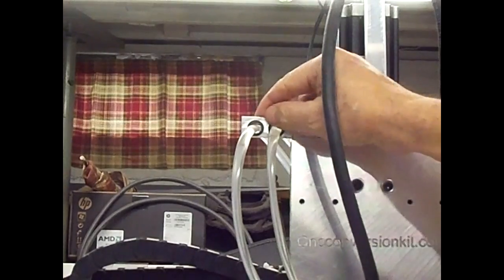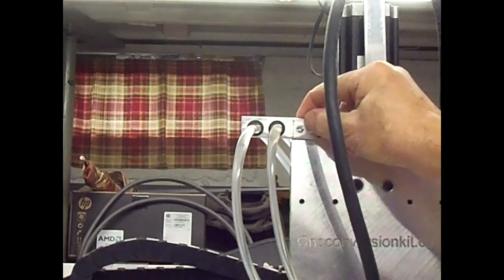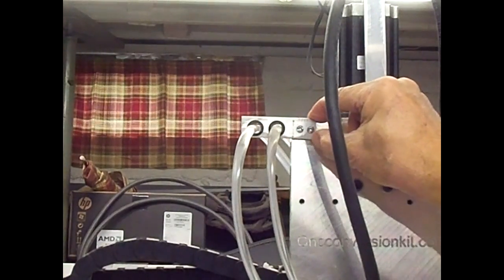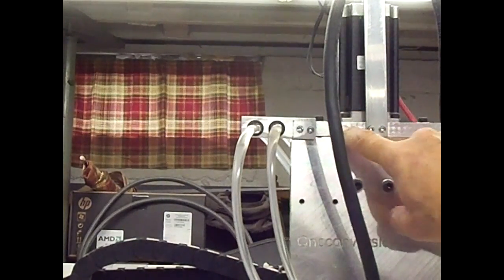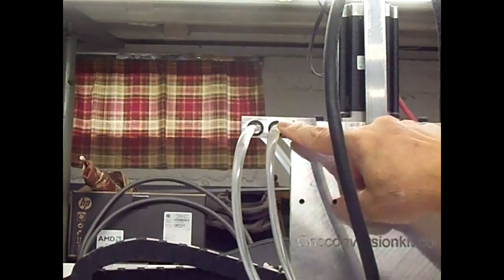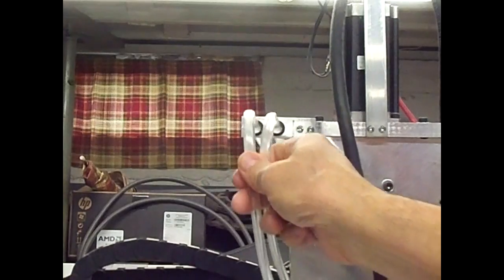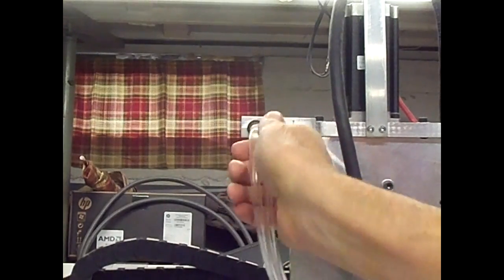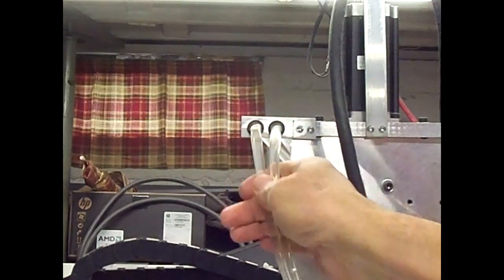I made another little bracket right here that consists of just a piece of, I believe, 1/16 inch thick aluminum flat bar screwed to the aluminum plate here, and two holes with rubber grommets just to protect the tubing so it can move back and forth as the z-axis goes up and down.